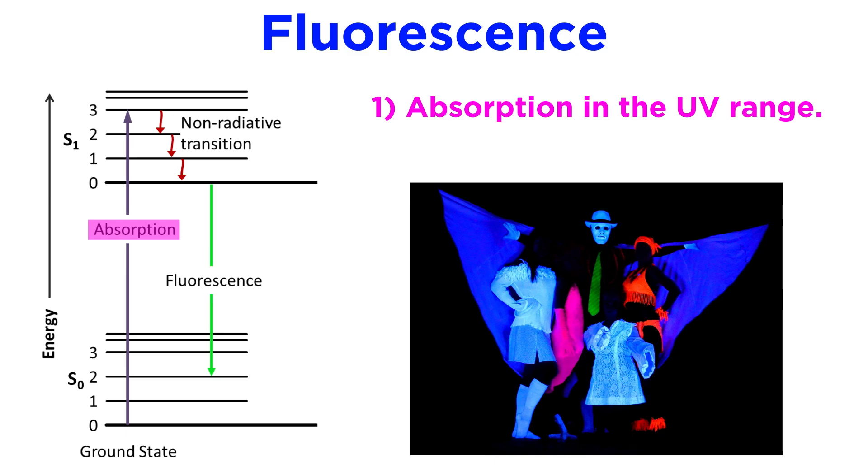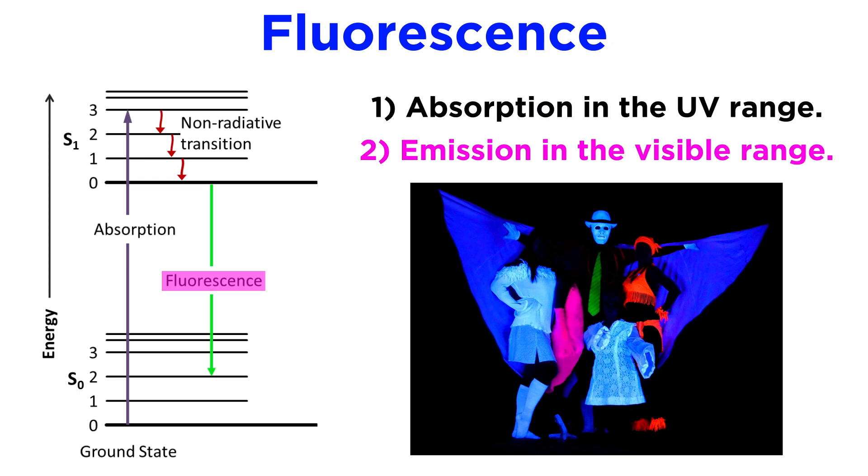An example of this is certain kinds of fluorescent objects that absorb light in the UV range, which we can't see, and then emit visible light, a phenomenon responsible for a variety of glow-in-the-dark commercial products.